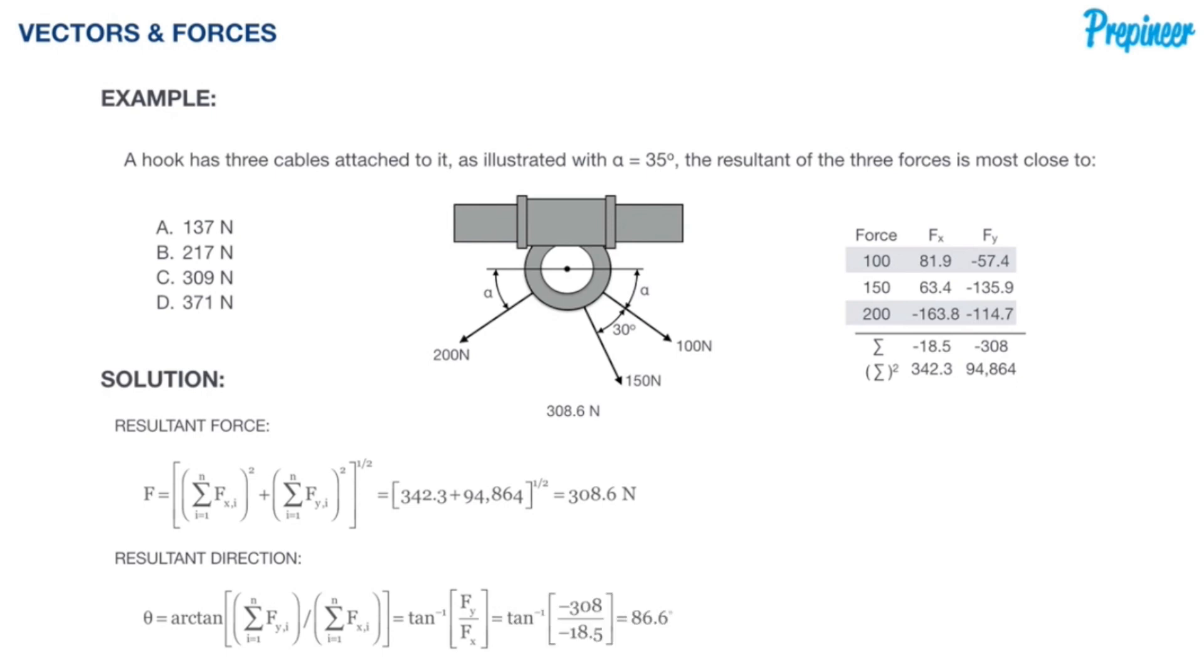That gives us negative 308 divided by negative 18.5, and when we work it all out we're going to get an angle of 86.6 degrees, and that's a resultant vector.